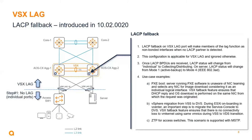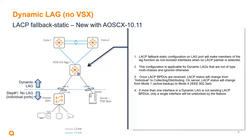The original LACP Fallback feature, introduced in 10.2.20 for VSX lags: without LACP Fallback, the ports connected to the VSX pair will be blocked until LACP frames are present. Once those packets start showing up, the port status changes from individual to collecting and distributing. In this example, the distribution switch implements the LACP Fallback Static feature on dynamic lags 10 and 20 so that the non-bonded interfaces are able to communicate. One difference with LACP Fallback Static is that if there's more than one non-bonded interface, it's only going to bring up one of them.